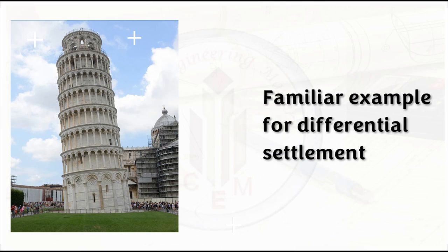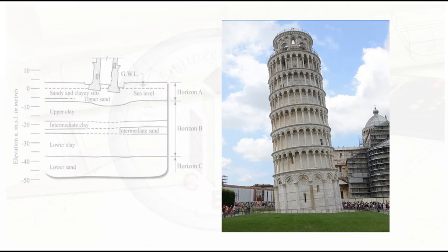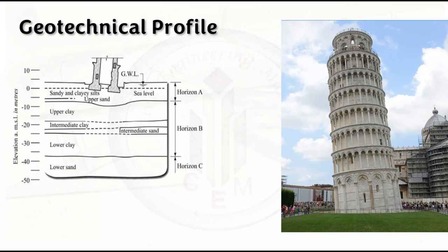The most familiar example of differential settlement is the Leaning Tower of Pisa. It took two centuries to build due to problems with differential settlement and inclination. The tower is built on wetlands with a geological profile consisting of clay and fine sand with a high level of groundwater. Looking at the geological profile, the presence of both sand and clay soil is the main cause of the differential settlement of the Leaning Tower of Pisa.